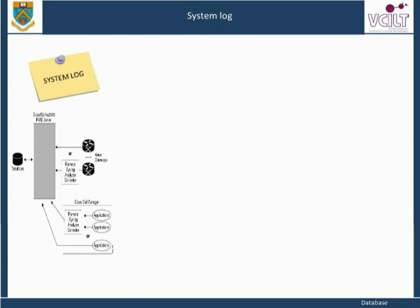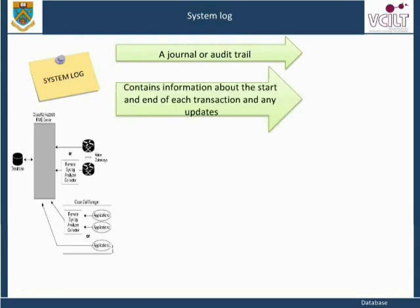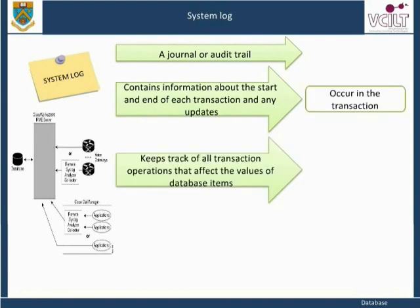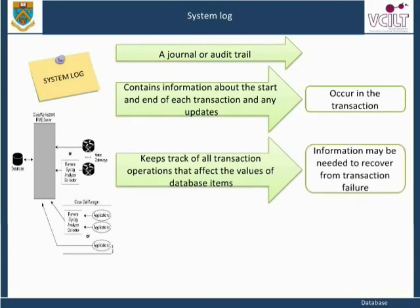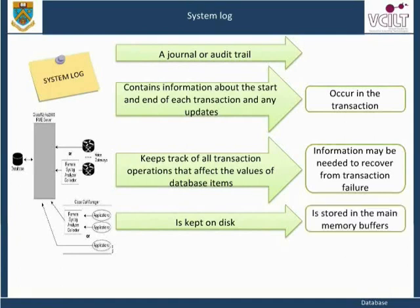The system log is sometimes called a journal or audit trail. It contains information about the start and end of each transaction, and any updates which occur in the transaction. The log keeps track of all transaction operations that affect the values of database items. This information may be needed to recover from transaction failure. The log is kept on disk, apart from the most recent log block that is in the process of being generated, which is stored in the main memory buffers. Thus, the majority of the log is not affected by failures except for a disk failure or catastrophic failure.